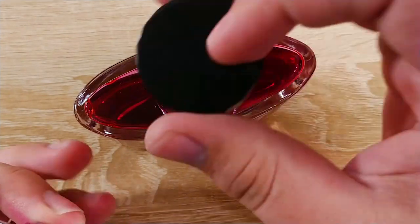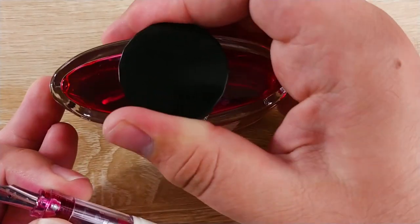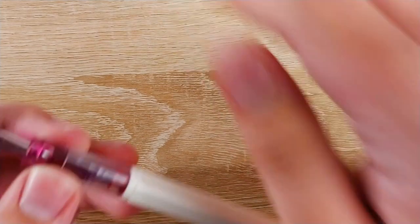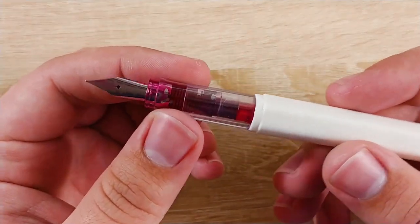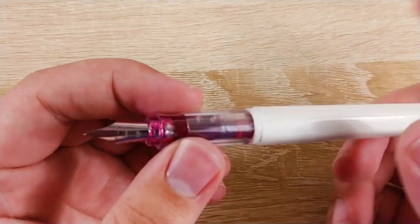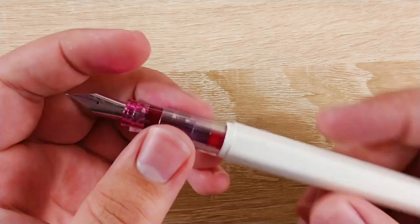I'm going to get this ink out of frame, so you can take a little bit better look at the pen here. So, you can definitely see the ink down in there, and it does give you enough of an ink window to see what your ink level's at.